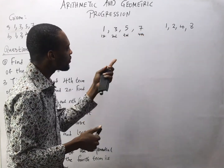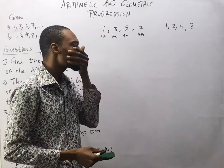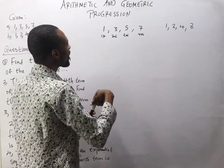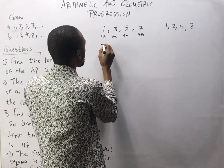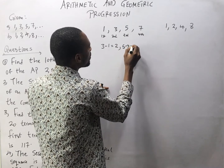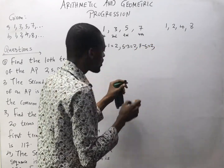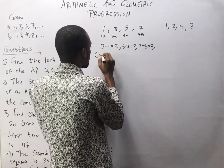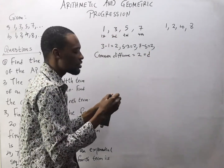So if you are asked to look for the fifth term, how do you get that? We simply need to know the differences between them or the pattern. This is 1 and this is 3, this is 5, this is 7. It is very easy to know that 3 minus 1 is 2, 5 minus 3 is 2, and 7 minus 5 is 2. So the difference between them is 2. We call that the common difference, D.